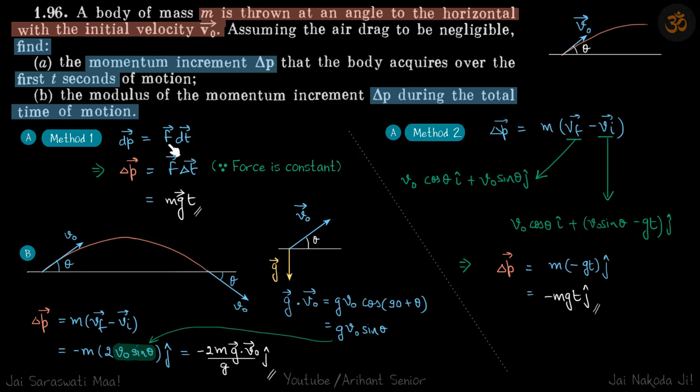Let's find it in two ways: one is integral of F dt and one is m into final velocity minus initial velocity. Let's start with F dt. This is simpler because we know force is constant. So in a projectile motion, force is mg vector times delta t is t, so delta p is mg vector into t.